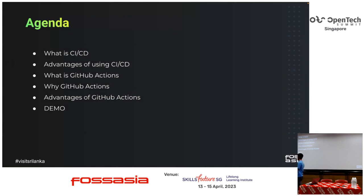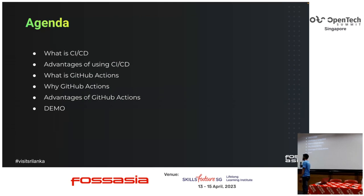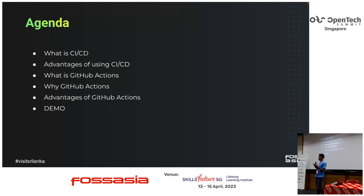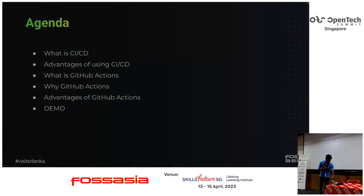The agenda is simple. We're going to talk about what is CI/CD — since this is going to be beginner friendly — and why we need to use CI/CD. Then what is GitHub Actions and what are the benefits of using GitHub Actions. And finally, we can have a demo if the time allows.